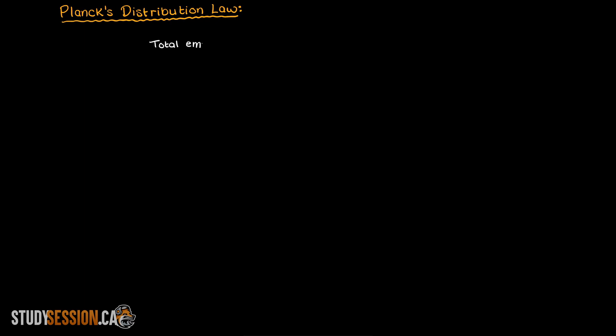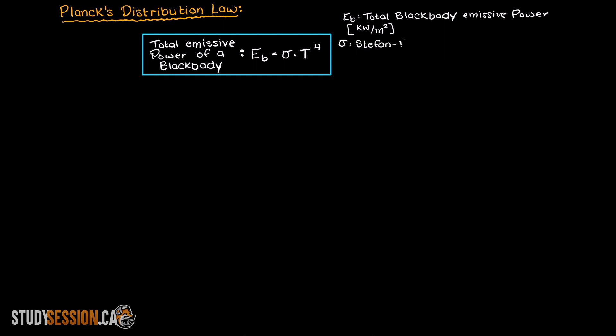Previously we talked about the total emissive power of a blackbody, that is, how much energy will an ideal body which absorbs all radiation and emits all radiation emit? If you remember, it is represented by this equation here. However, we never really discussed how we arrive at the total blackbody's emissive power formula.